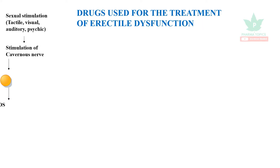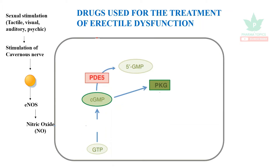Welcome to our pharma topics channel. Let us discuss the drugs used for the treatment of erectile dysfunction. Sexual stimulation causes stimulation of the cavernous nerves, and the cavernous circulation generates endothelial nitric oxide. From endothelial nitric oxide, nitric oxide is generated which enters into the circulation.